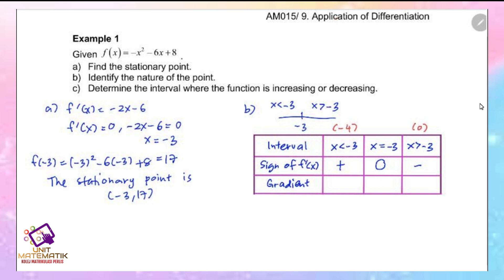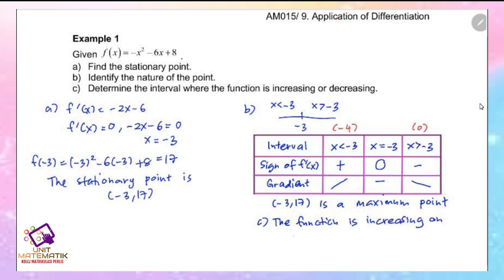When the sign is positive, the gradient is increasing. When x greater than negative 3, the gradient is decreasing. We conclude that (negative 3, 17) is a maximum point because the gradient increases from the left then decreases. For part (c), the function is increasing on the interval negative infinity to negative 3, and decreasing on the interval negative 3 to infinity.